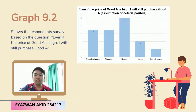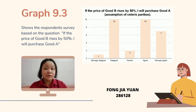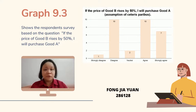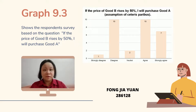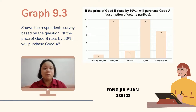So the rate of purchase for good A is lower than good B when the price of good A is greater than good B. Graph 9.3 shows survey results on 'if the price of good B rises by 50%, I will purchase good A.' From 30 respondents, the highest response was equal at 10 respondents each for disagree and agree respectively, while 7 chose strongly agree and only 1 chose strongly disagree. Some respondents still maintain selecting good B even when the price is higher due to higher satisfaction, while others will select good A when good B's price increases.